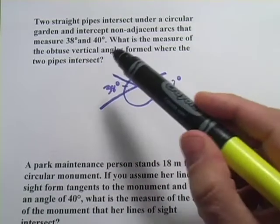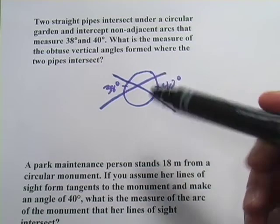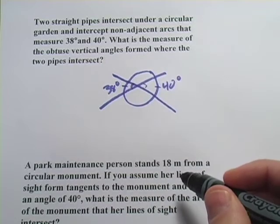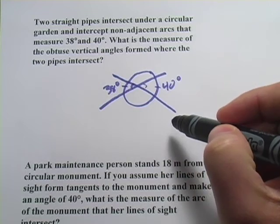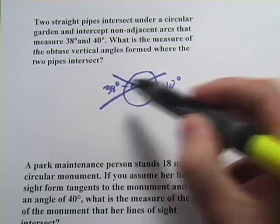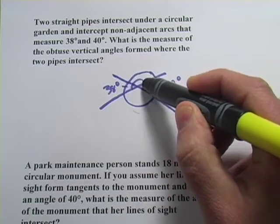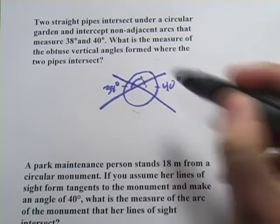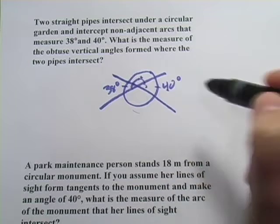What is the measure of the obtuse vertical angles formed where the two pipes intersect? You know that this angle and this angle are the same because they're a pair of vertical angles. They're not the obtuse angle in this situation though because we've got these small arcs being intercepted and larger arcs over here, so the obtuse angles must be these. Well I can find that if I find this angle first because it forms a linear pair with one of the small angles.